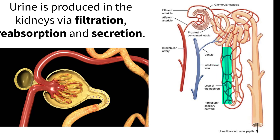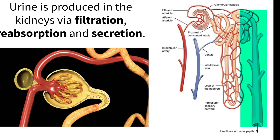Additional solutes are reabsorbed from the ascending limb as these cells are not permeable to water. The distal convoluted tubule and collecting ducts continue to reabsorb water and solutes, leaving a small amount of urine left in the filtrate.